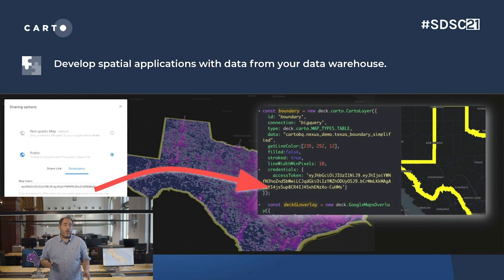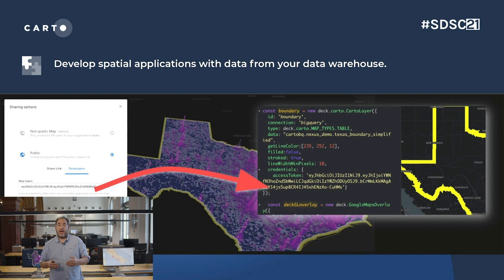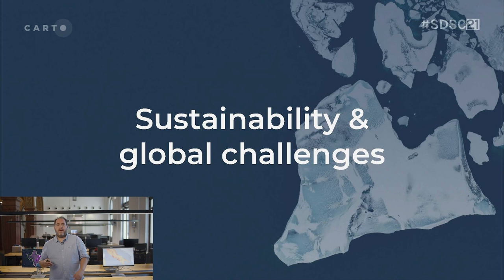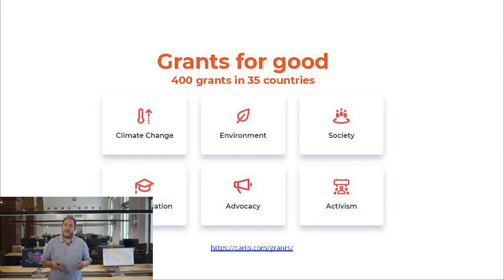Now I don't want to finish this presentation without touching on something we care a lot about at Carto. Think of how many still dispute climate change despite scientific consensus — a big part of this is due to how complicated it is to understand data. That's why we began our mission to get the best location data into the hands of changemakers around the world. We have already awarded grants to small non-profit organizations with limited resources working to have an impact on climate change, society, education, advocacy, and activism. We are also providing additional grants to organizations fighting to contain the global COVID-19 outbreak, and so far we have granted more than 400 projects in 35 different countries.